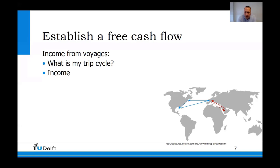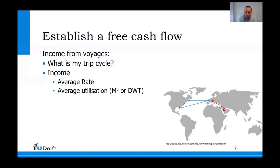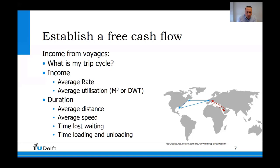For such a triangle or back-and-forth route, I can calculate the total income. Using the average rate and the average utilization of my ship — how much weight and cargo there is — I can calculate what my income will be. I also need to determine the duration: the average speed, the average distance to travel, time lost waiting for berths or new cargo, and time lost loading and unloading. This gives a total cycle duration and a total cycle income.